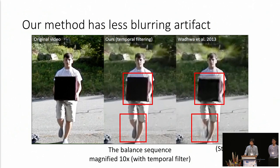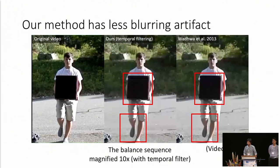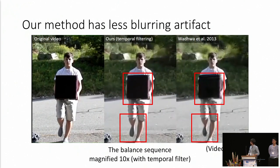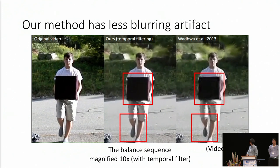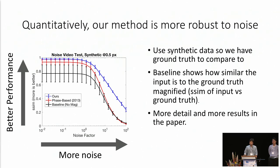Another consequence of end-to-end training is less blur. Looking at the boy's foot, our result is much better preserved, whereas the phase-based result is completely blurred out. We also perform quantitative tests on noise robustness using synthetic data with ground truth. As the plot shows, our network consistently outperforms the phase-based method; in particular, the phase-based method quickly drops to baseline level as noise increases.